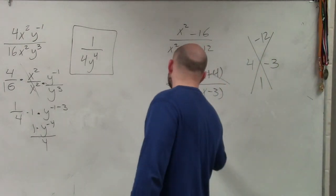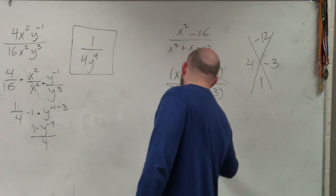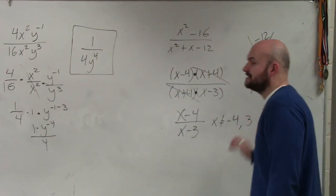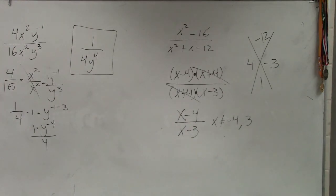So my final answer is x minus 4 divided by x minus 3, where x cannot equal negative 4 and x cannot equal 3. Make sure you also contain those constraints.